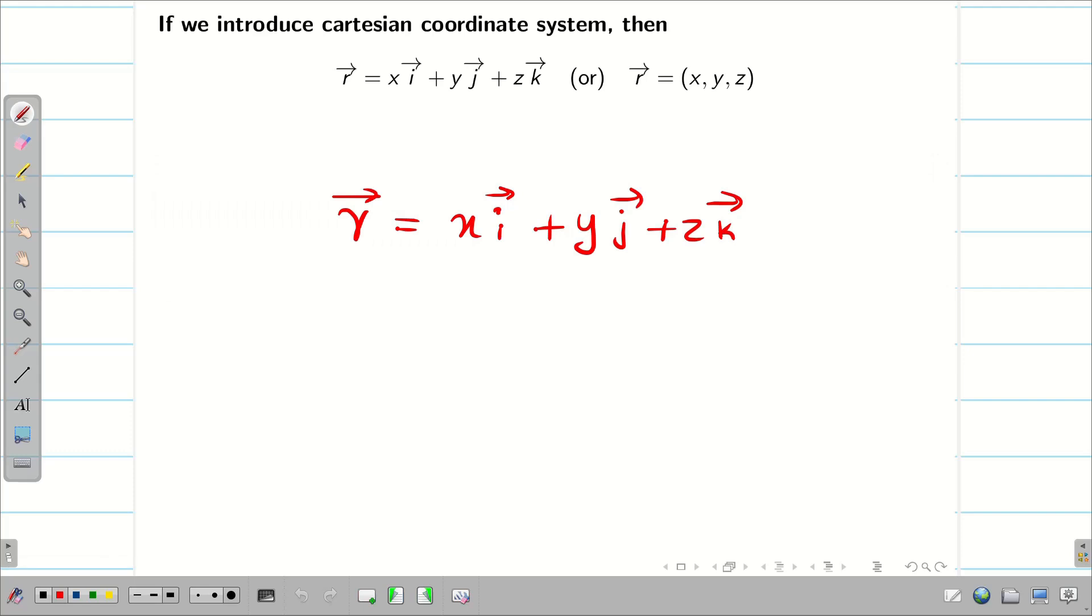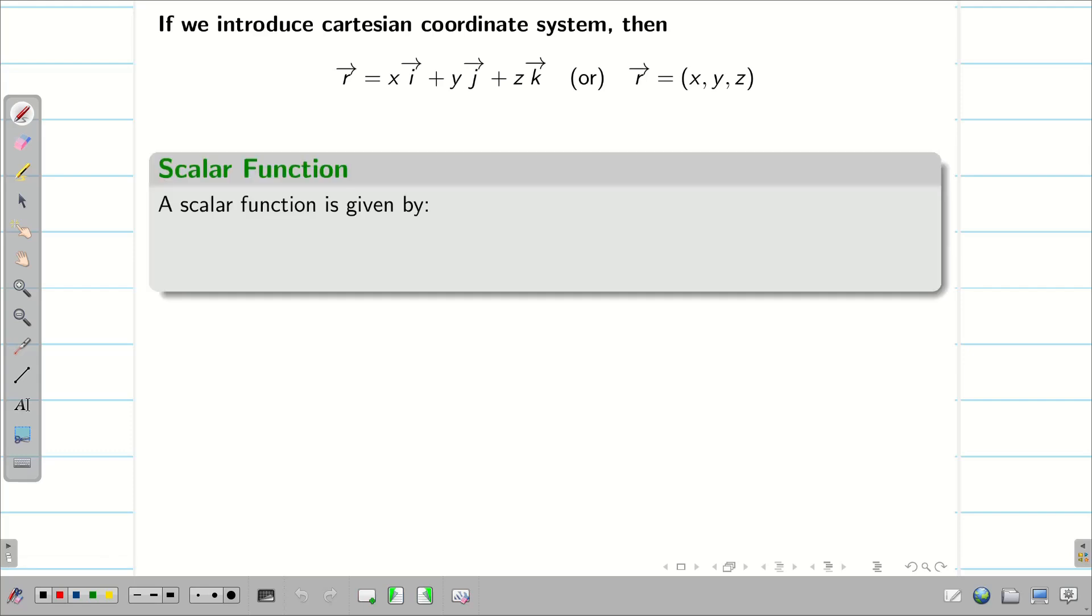From this, we are going to define a scalar function. A scalar function is defined by phi of x, y, z. It need not always be phi. We can take psi, omega, gamma, alpha, beta, whatever notations. In general, usually people use phi, where phi is a real valued function. For example, phi as xyz or x square plus y square plus z square or x square y z cube minus y square, whatever you want.